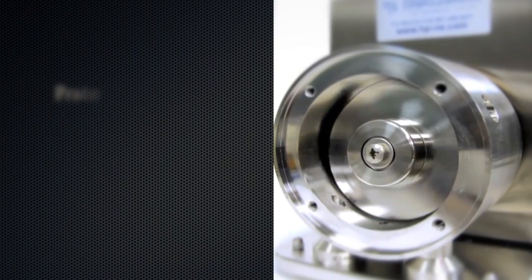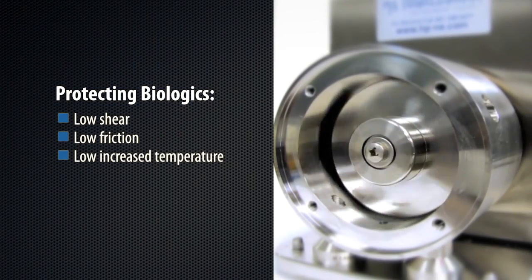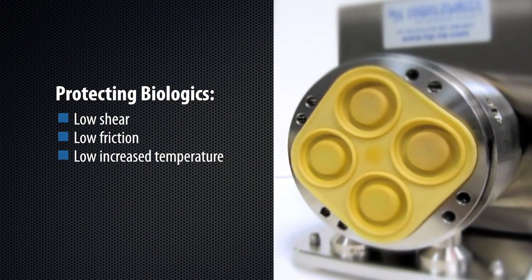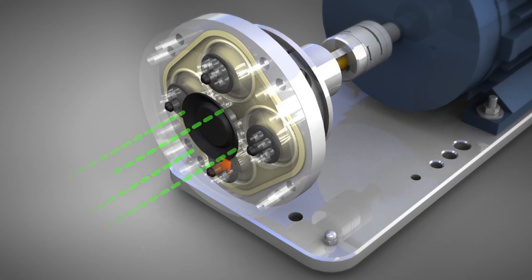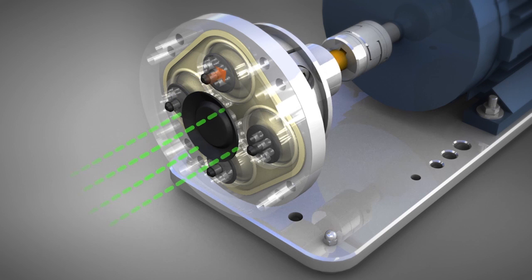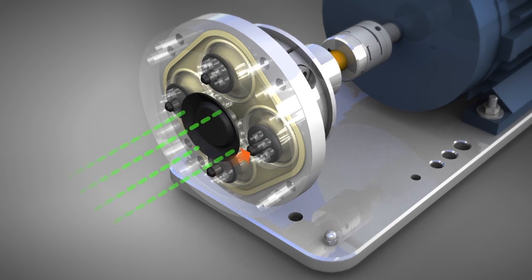Here, you can see how the Quattroflow pump creates a gentle circular movement for each of the diaphragms. As each diaphragm expands, it gently pushes fluid through the valve, which acts like a heart valve. Fluid only goes one way.